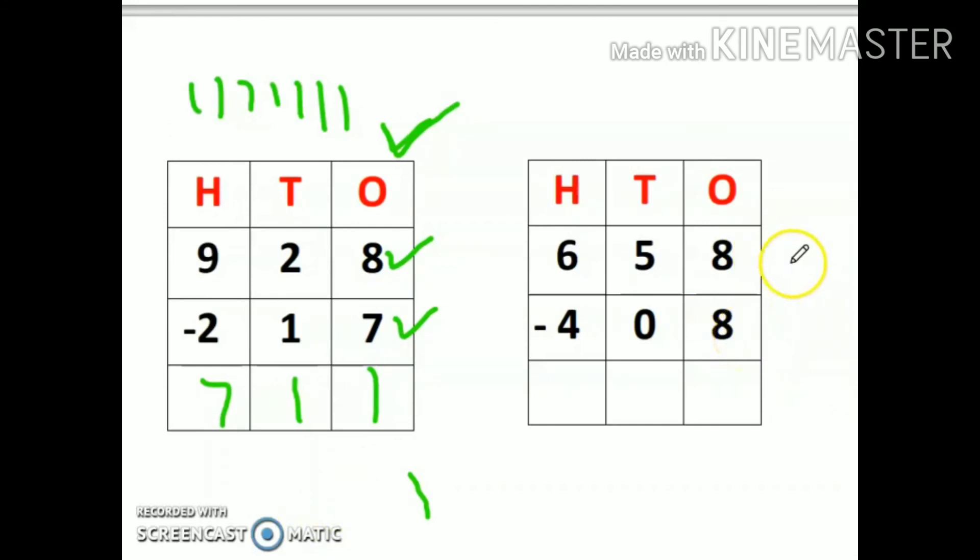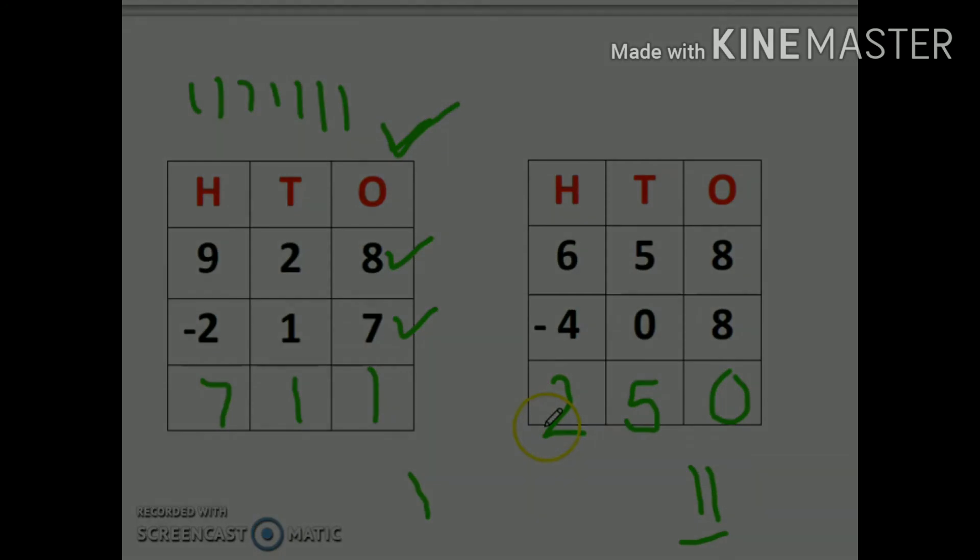Now eight minus eight. Whenever the same number is subtracted, the answer is zero. When zero is subtracted, the answer is the same number, so five. Now six minus four is two. I will start from four and count till six: five, six. Two fingers are up, so my answer is two.